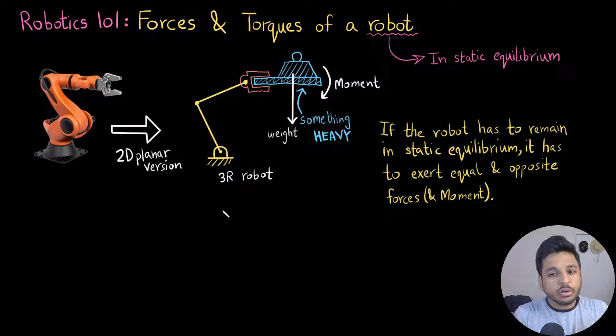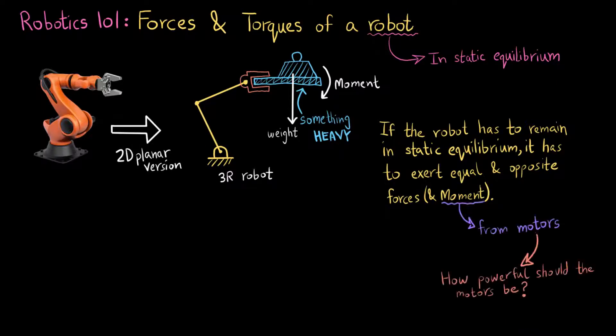So if the robot has to remain stationary in static equilibrium, I know that the robot has to exert an equal and opposite force and moment. And where does this moment come from? It comes from the motors. So the reason that we are doing this force and torque analysis is to figure out how powerful the motors of the robot should be.